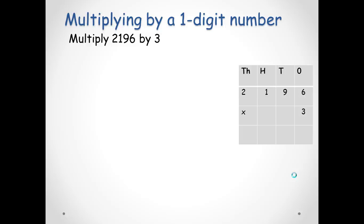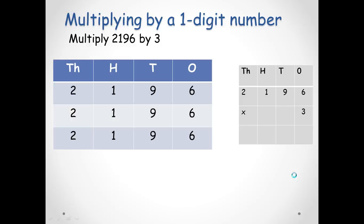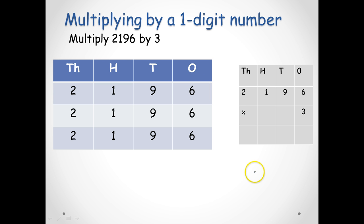Let's try multiplying 2,196 by 3. We know that multiplication is repeated addition, and we can write down the number 3 times. Let's start by multiplying the ones: 6 ones times 3 is 18 ones. We regroup or rename them — it will be 1 ten and 8 ones.